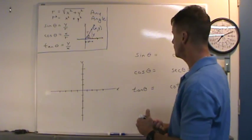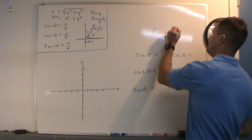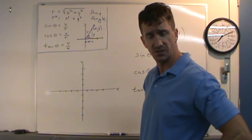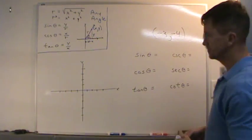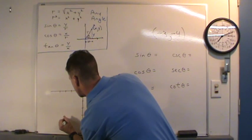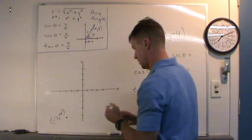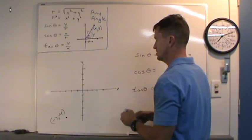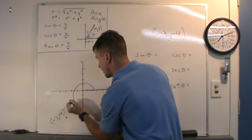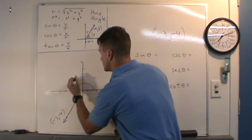Let's get started with an example. Let's say the point negative 3, negative 4 lies on the terminal side of an angle in standard position, and we need to evaluate the six trig functions. We'll start with a sketch. We'll plot this point: negative 3, negative 4. That's in quadrant 3. I'll sketch an angle in standard position — here's the initial side, it rotates, and here's our angle theta.